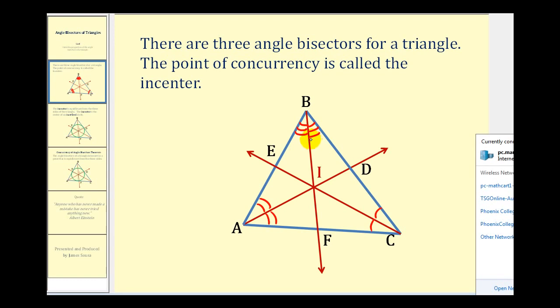When we construct the three angle bisectors of a triangle, all the bisectors will intersect at the same point. This is called the point of concurrency, and it has a special name. This point right here is called the incenter.